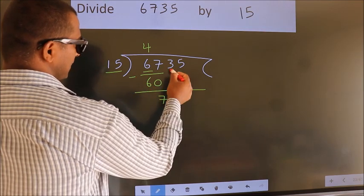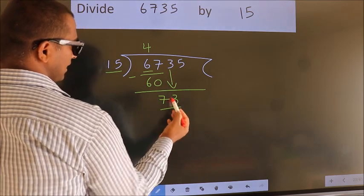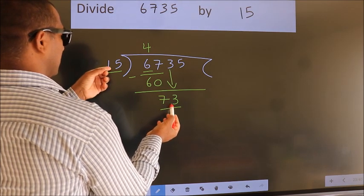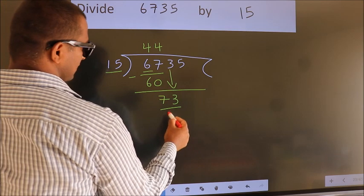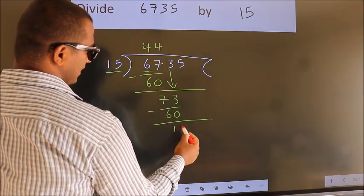After this, bring down the next number. So, 3 down, giving us 73. A number close to 73 in the 15 table is 15 fours, 60. Now we subtract. We get 13.